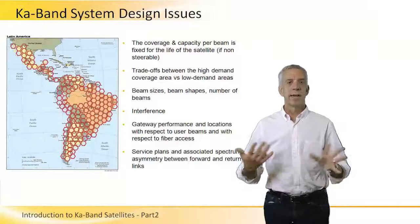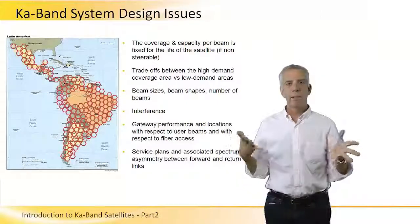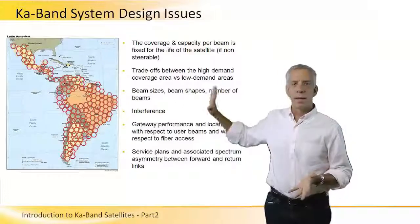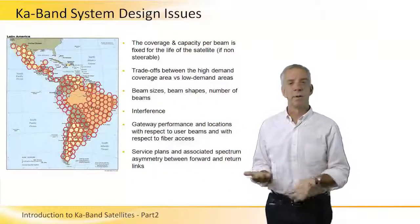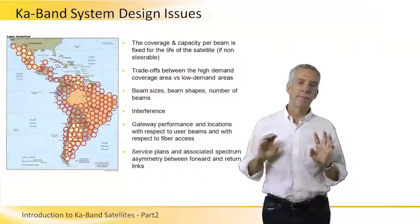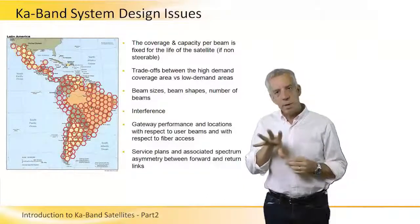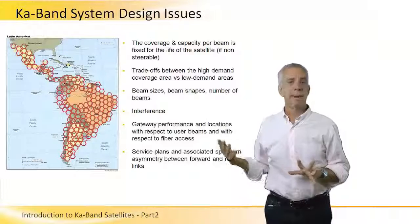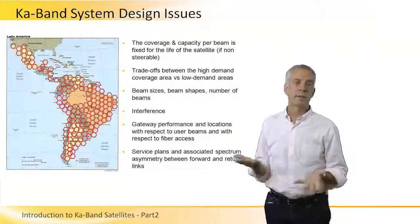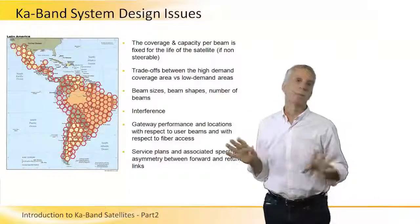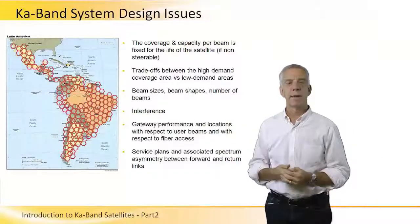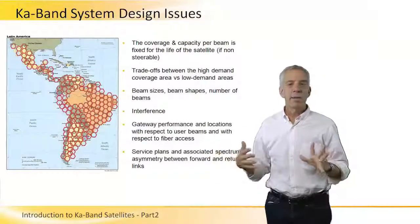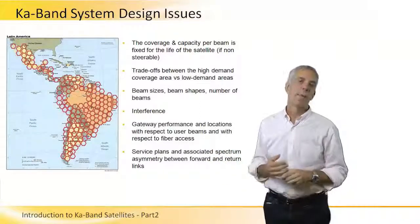When an operator decides to deploy KA band for data, they have to make a number of key design decisions. Among the most important is the fact that the satellite will last 15 years, and to get maximum capacity, those beams are going to be fixed. So the beam pattern, the location of those beams, and the distribution of capacity are all fixed for 15 years — the operator needs a very good idea of what the market will look like over the satellite's lifetime.